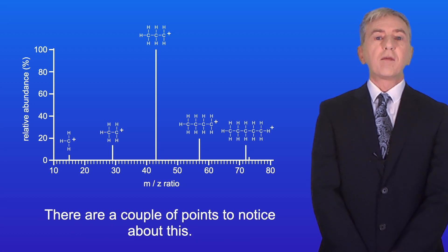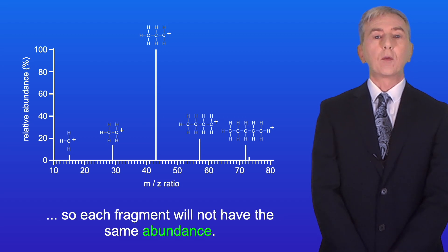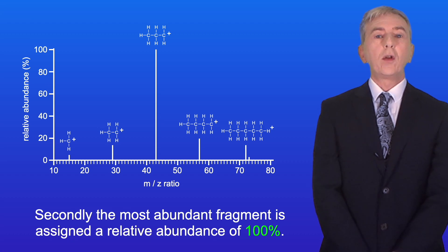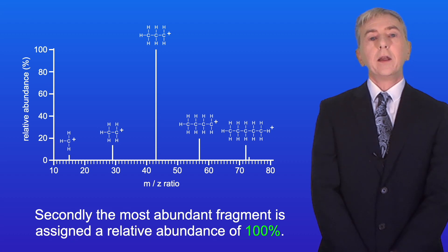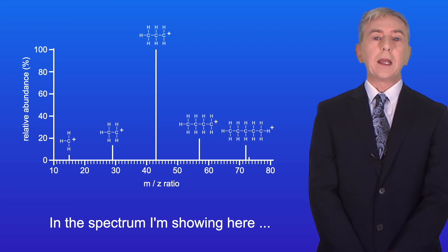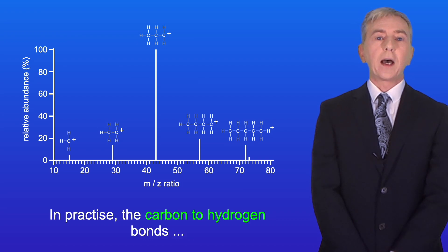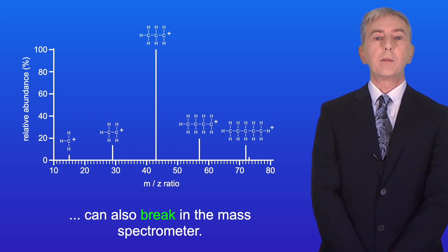Now there are a couple of points to notice about this. Firstly some fragments are more stable than others so each fragment will not have the same abundance. And secondly the most abundant fragment is assigned a relative abundance of 100%. Scientists call this the base peak. In the spectrum shown here the most abundant fragment is the propyl ion.